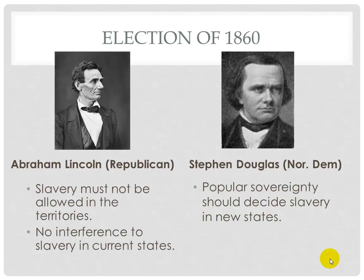The Republicans' platform was meant to broaden the party's appeal in the north. They don't want slavery allowed in the territories, but they also don't want interference with slavery in its current states.